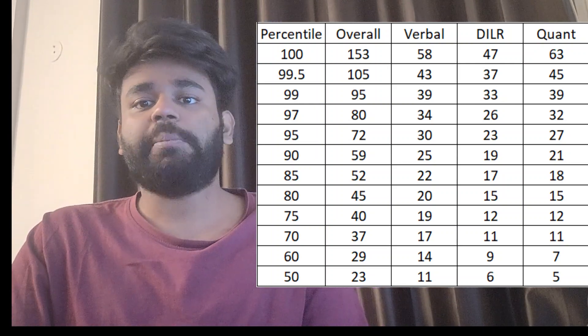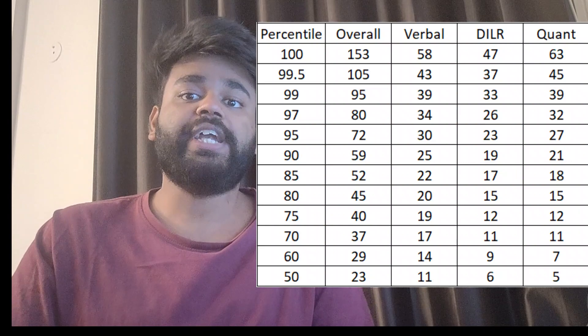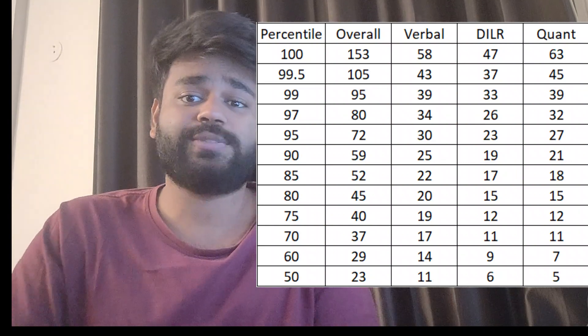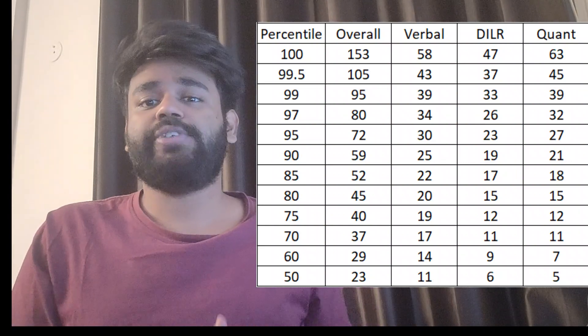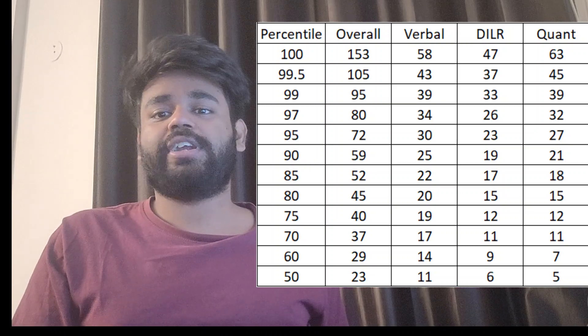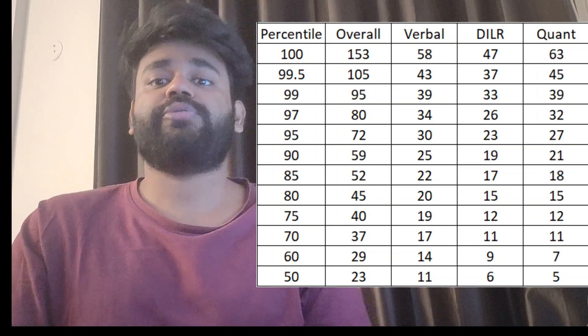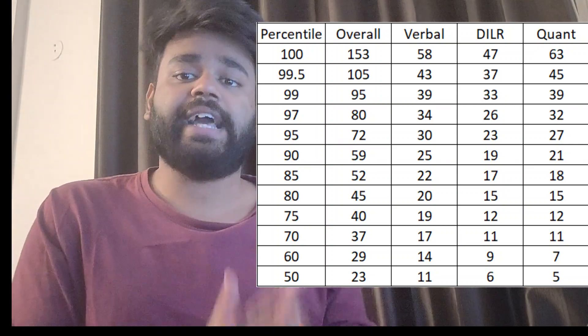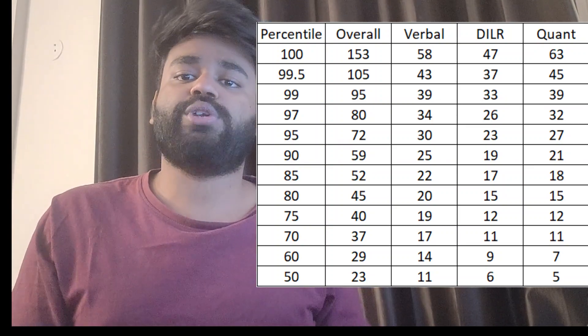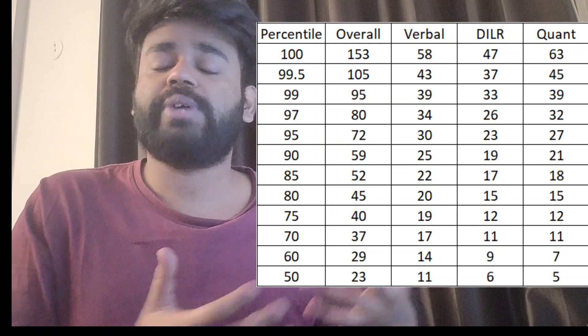For 90 percentile the bar is even lower. You need to get only 18 marks, just 6 questions correct, which means roughly 1-1 and a half questions. Or in 20 minutes just do 3 questions. That would be more than enough. Even if you prepare one of the areas very nicely, even if you do complete revision of arithmetic, you can easily get 90-95 percentile.